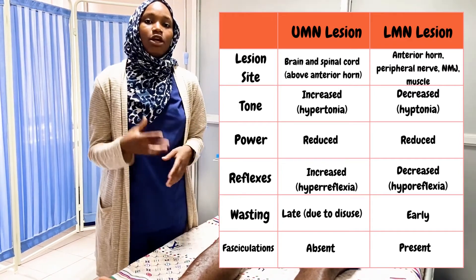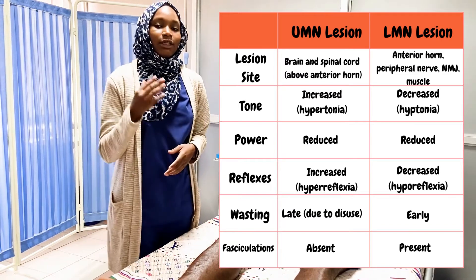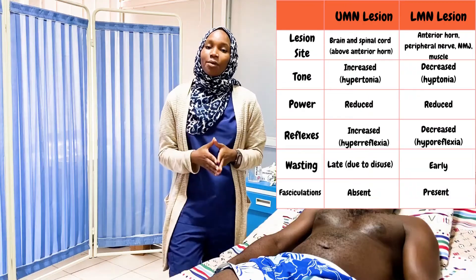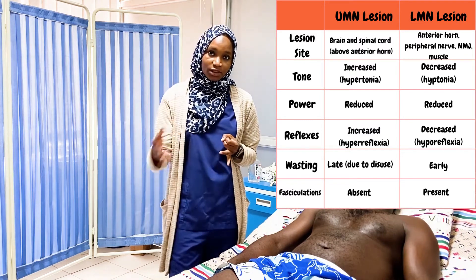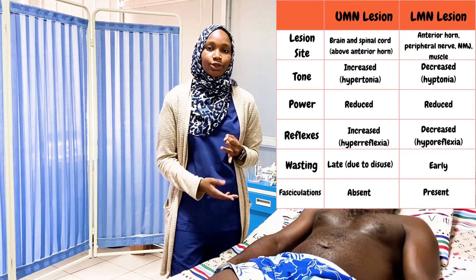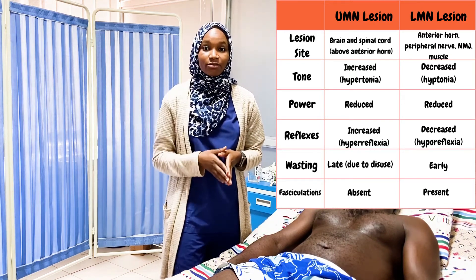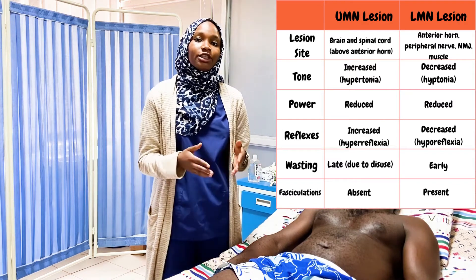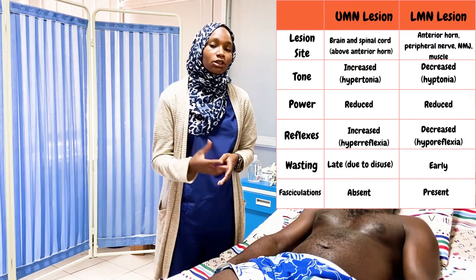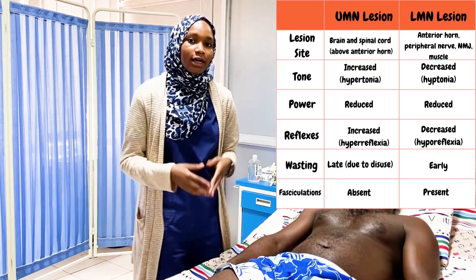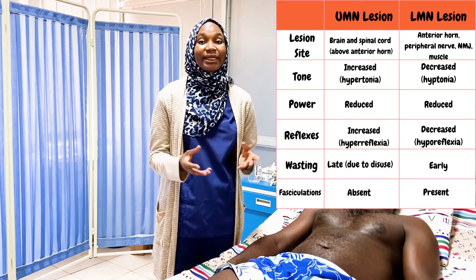In terms of signs, both upper motor neuron lesion and lower motor neuron lesion present with weakness. For upper motor neuron lesions, the patient will have hypertonia, positive clonus which falls under tone examination, hyperreflexia, and upgoing plantars which is the positive Babinski reflex. For lower motor neuron lesions, patients will have hypotonia, hyporeflexia, muscle wasting, and fasciculations.